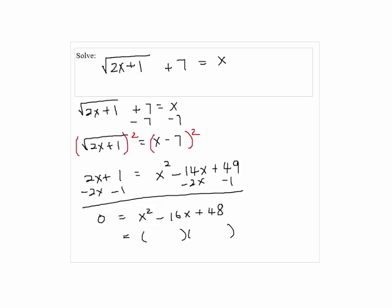Then, we can factor out the right-hand side. So we have x minus 4 times x minus 12 equals 0. So x equals 4 or 12.